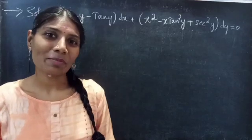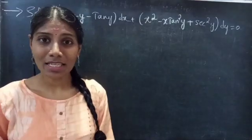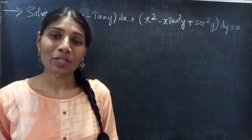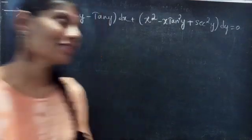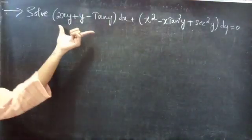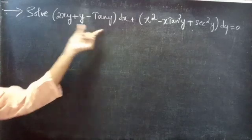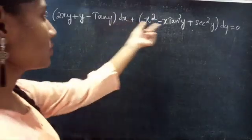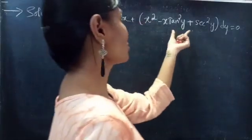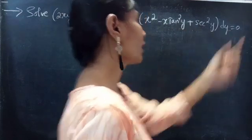Hello everyone, this is Zee Kalpana here. In this video we are going to see an exact equation problem. So let's get started. Solve: (2xy + y − tan y) dx + (x² − x·tan²y + sec²y) dy = 0.